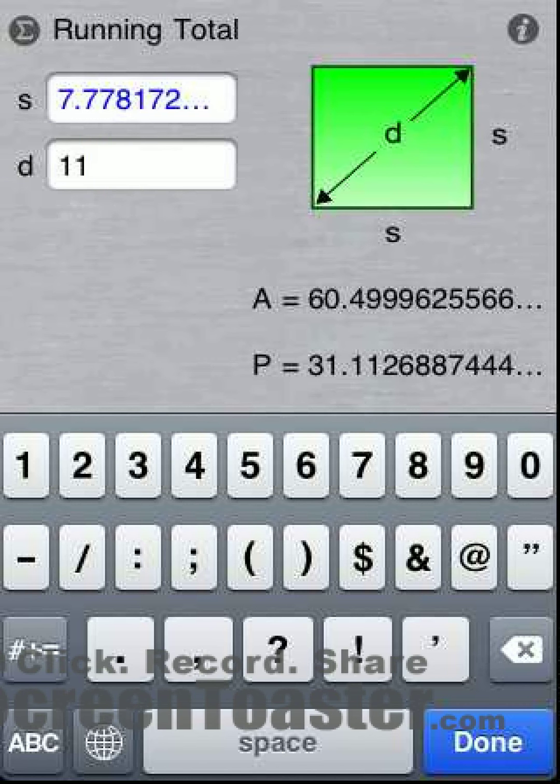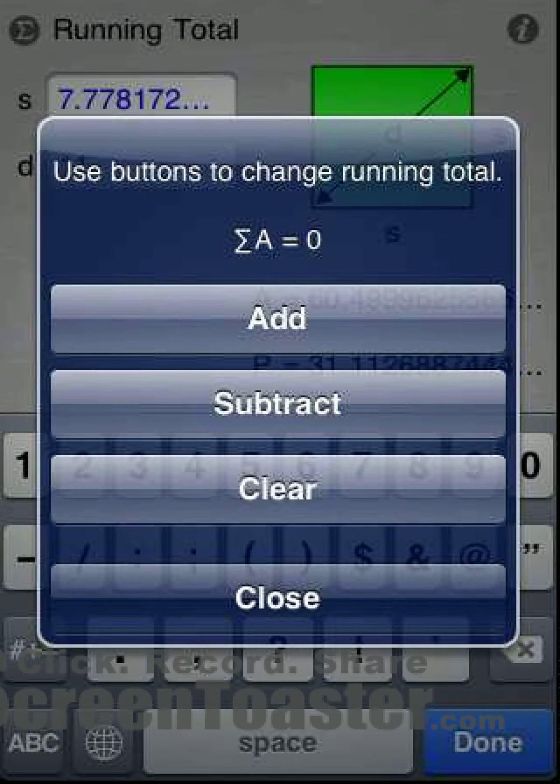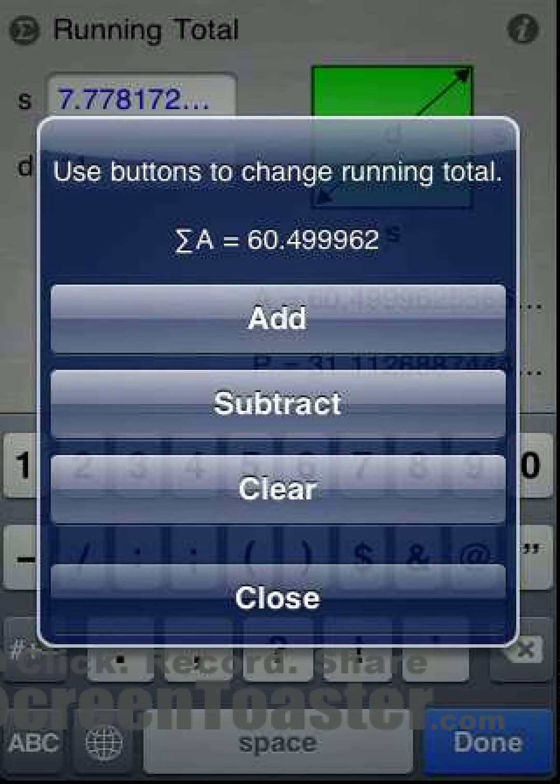To add the current area result to the running total, press the sigma icon. Press add. Note that multiple shapes can be added and subtracted from this running total. To subtract the area from the total, press subtract.